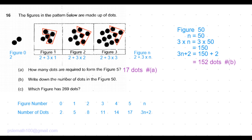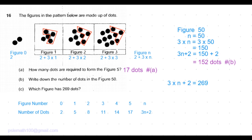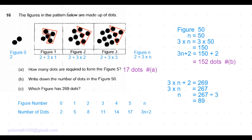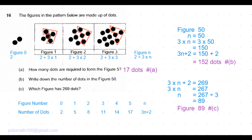Coming to part C of the question: which figure has 269 dots? So we can use the same formula: 3 times n plus 2 is equal to 269. Now the number of dots is given, which means 3 times n is 267, which means n is equal to 267 divided by 3, which is equal to 89. So figure number 89 would have 269 dots. So that's the answer to part C.